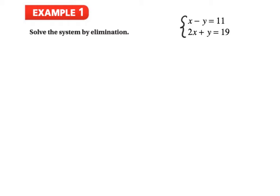Let's jump into our first example. We're going to solve this using elimination. The goal is to look at the variables. We have x and x — we want to look at their coefficients. This x has a coefficient of 1, this x has a coefficient of 2, this y has a coefficient of negative 1, and this y has a coefficient of positive 1. We label them equation 1 and equation 2.